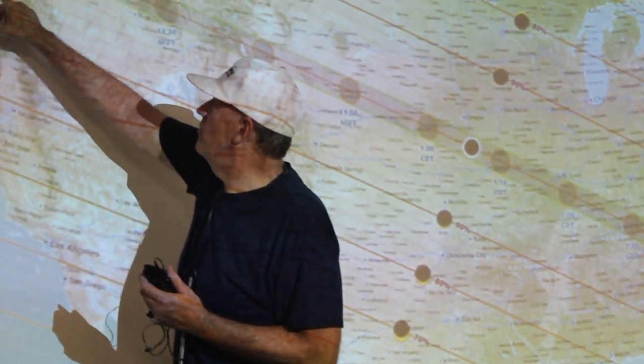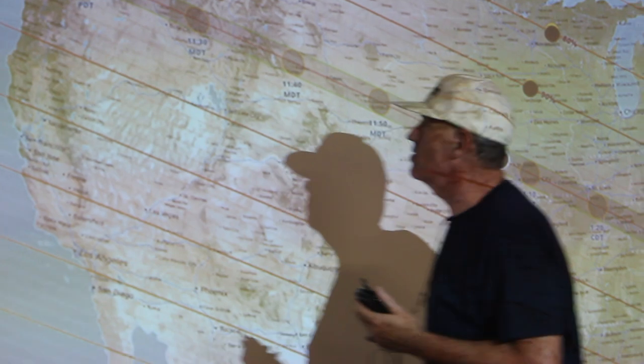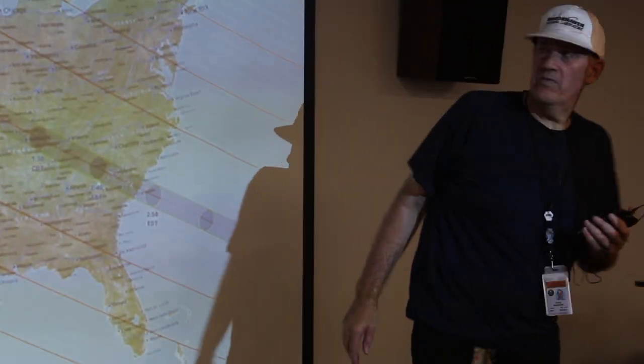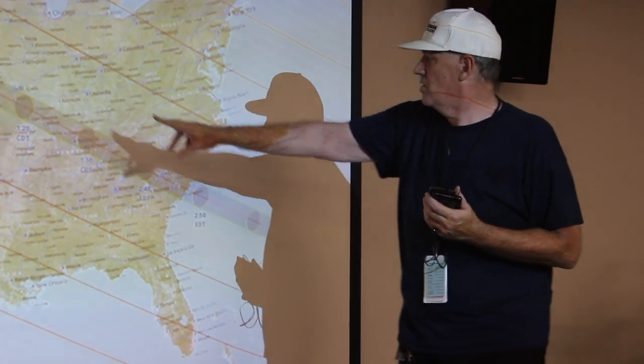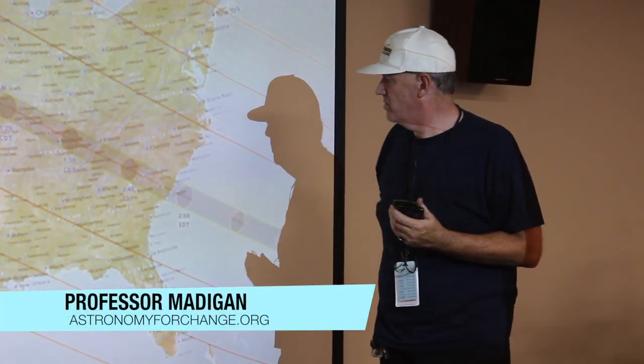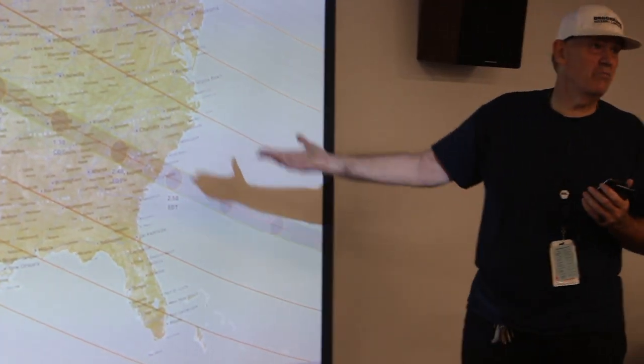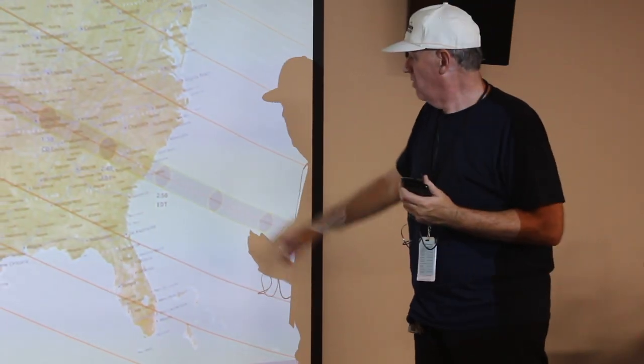This is the path of totality. At 10:18 this morning it makes landfall on the west coast of Oregon, Pacific Daylight Time, and makes its way across the country, exiting off the eastern coast of South Carolina at about 2:30 — about 40 minutes ago. Right now the shadow is out there somewhere, moving at a speed of 1,800 miles an hour — 2,400 kilometers an hour. That's how fast the moon is moving in its orbit, and that's how fast the shadow moves across the surface.